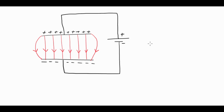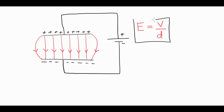There are a couple of equations you are going to have to be familiar with, and they are both given on your formula sheet. The first equation is how you calculate electric field: electric field is equal to the voltage divided by the distance, where that distance is the distance between the two plates. This formula only works for a uniform electric field. Voltage has units of volts and distance has units of meters, so electric field strength has units of volts per meter.